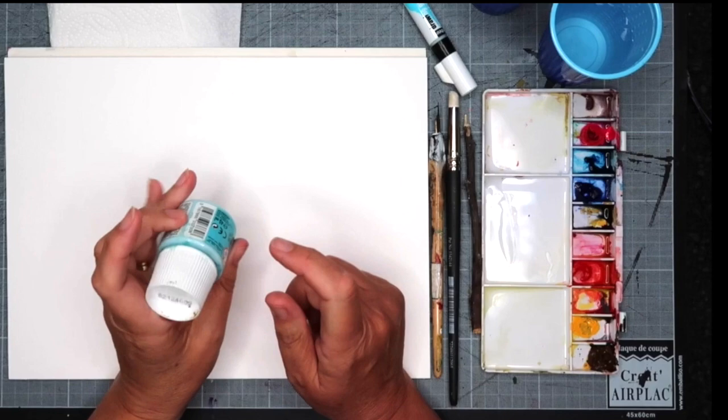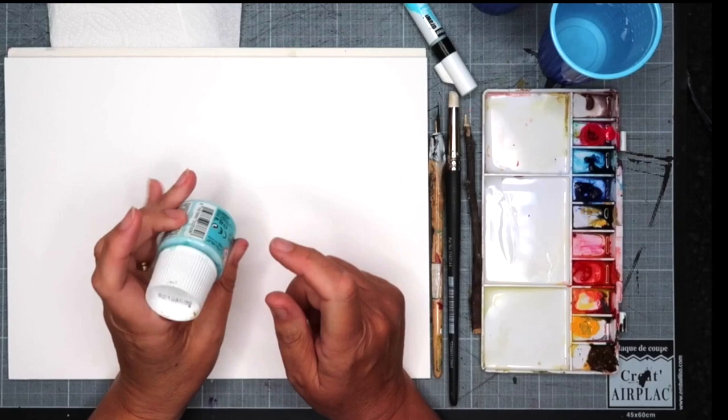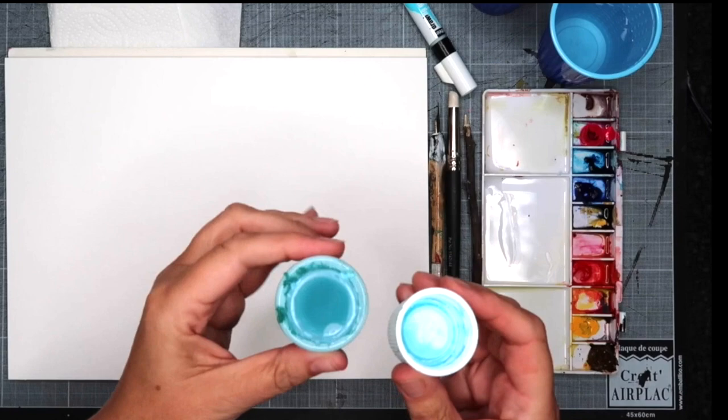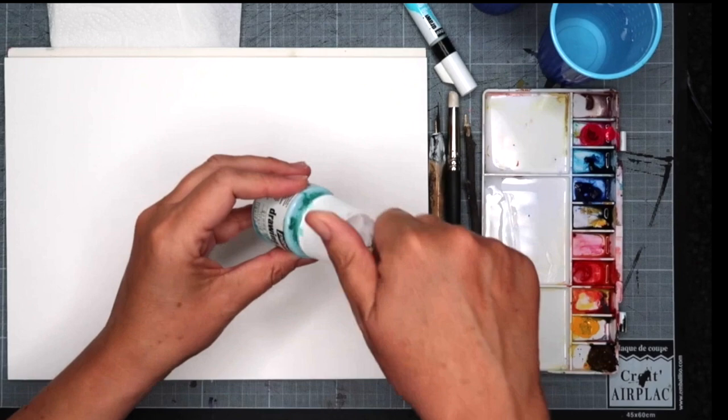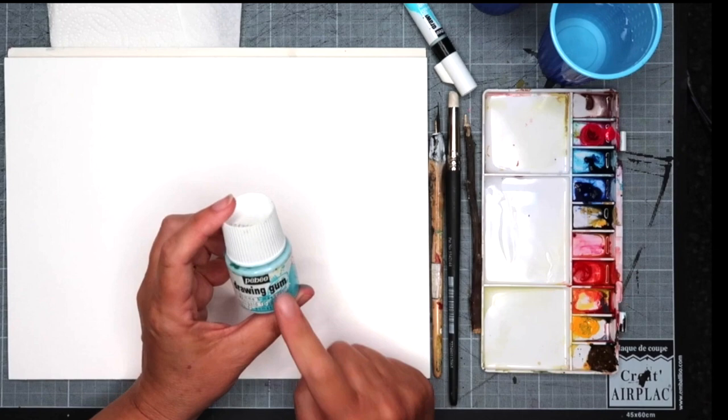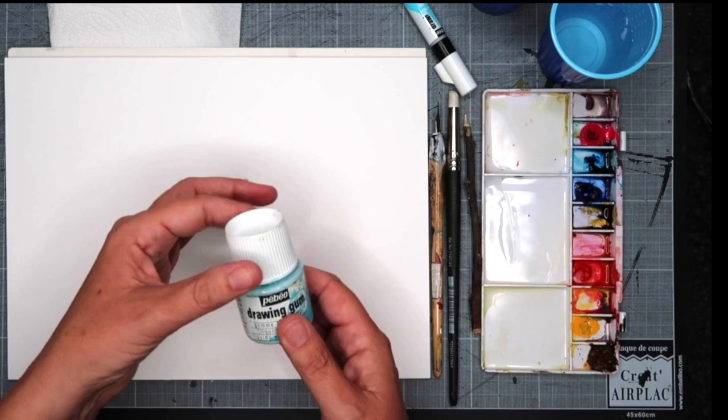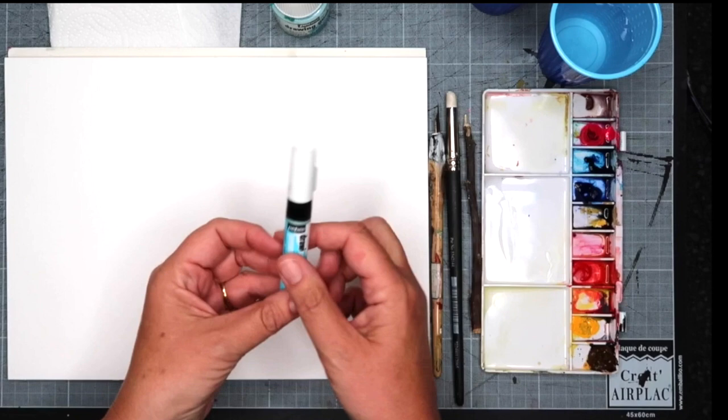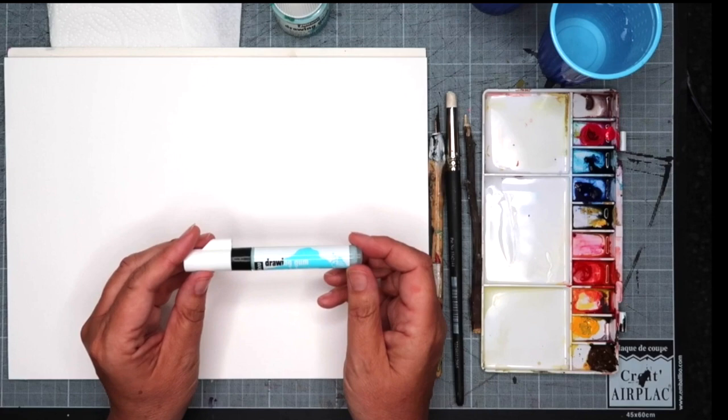How I buy masking fluid is I either buy these little pots. There's about 45 ml here. I buy them in these little pots; you can get them in bigger containers as well, but I like to buy them no bigger than this because I find it goes off after a while. That's Pebeo, but there's other brands. Or I buy these masking pens, and I use this masking pen in a lot of my YouTube videos. I find it really useful.